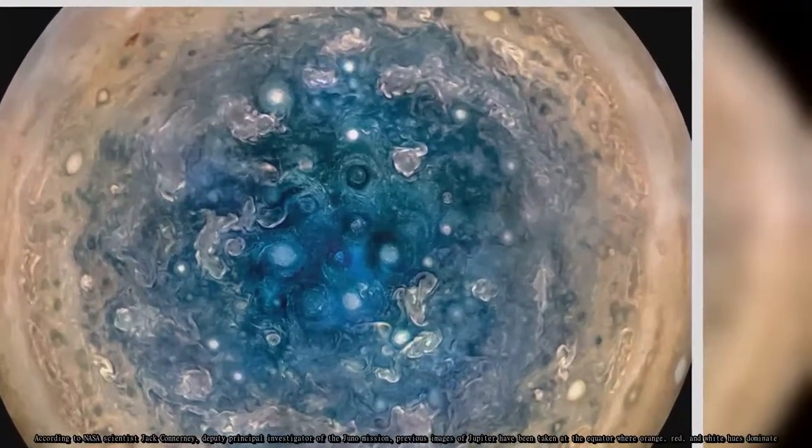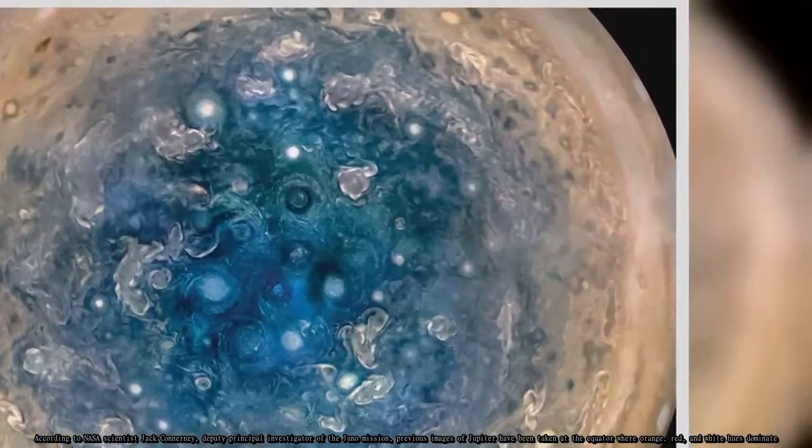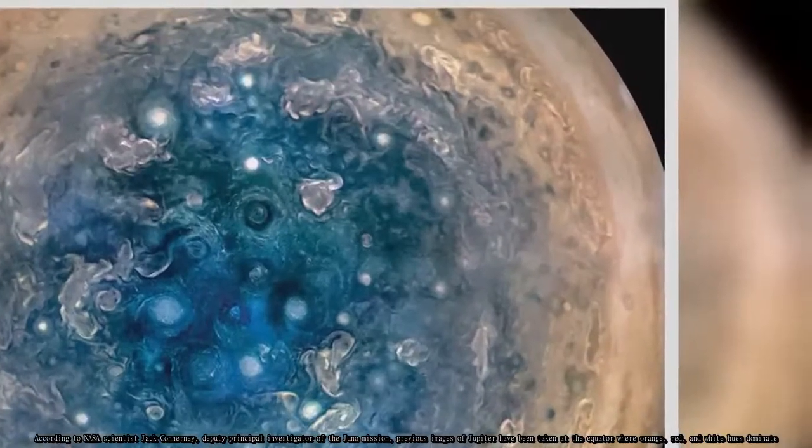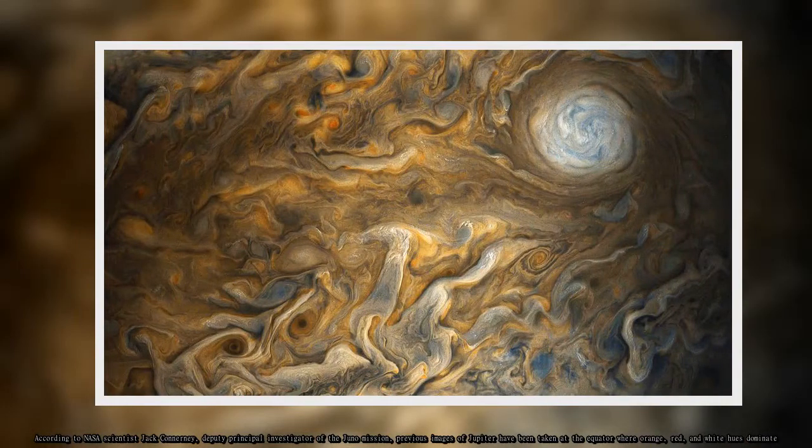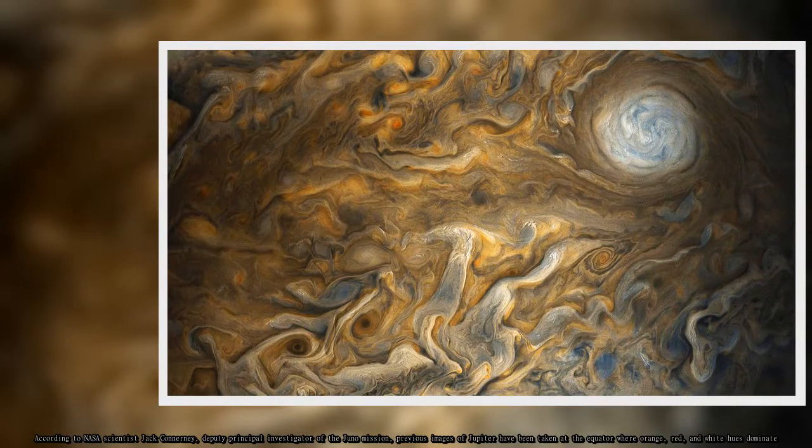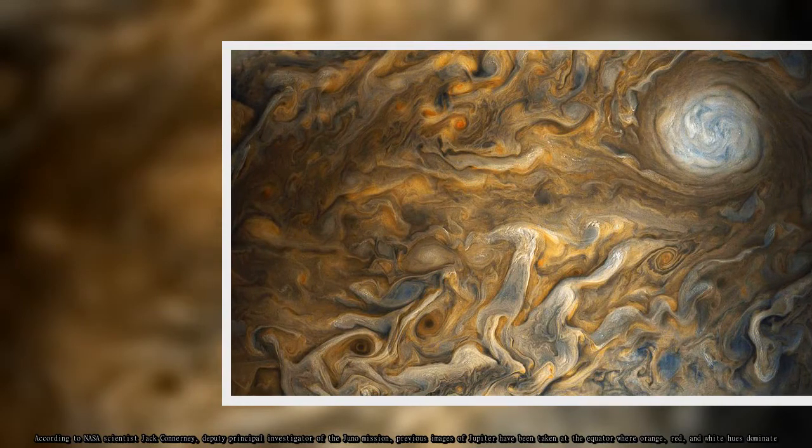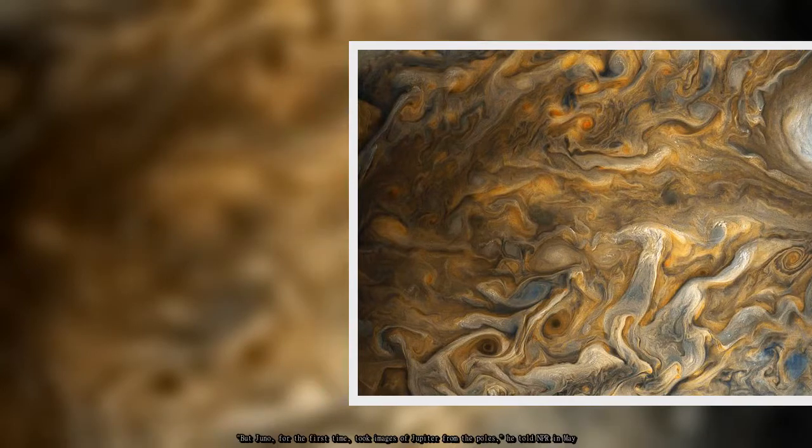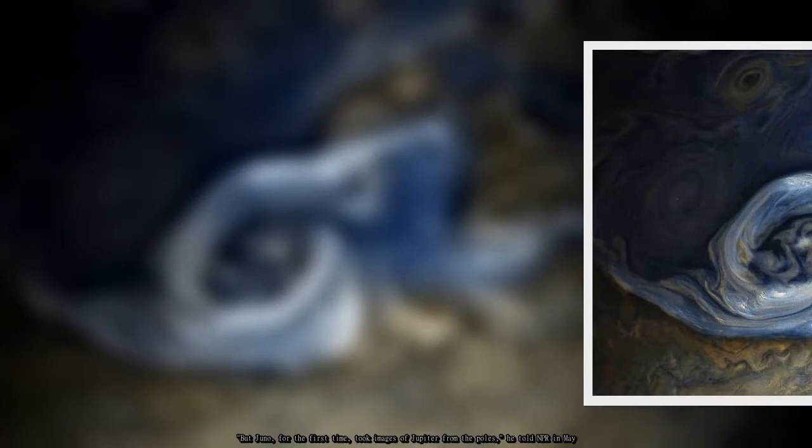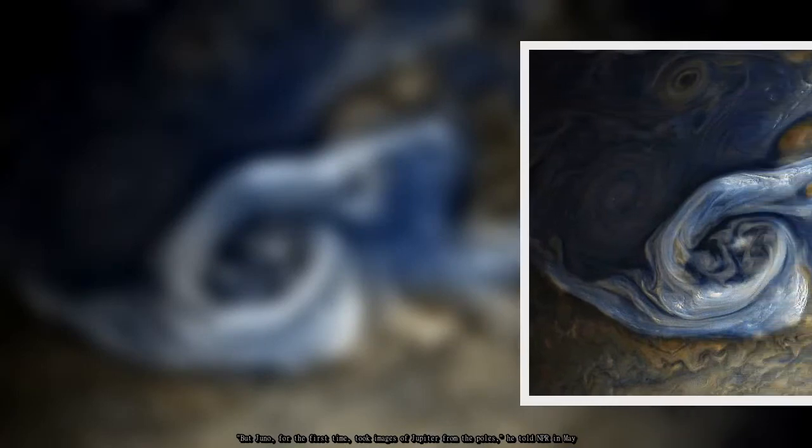According to NASA scientist Jack Connerney, deputy principal investigator of the Juno mission, previous images of Jupiter have been taken at the equator where orange, red, and white hues dominate. But Juno, for the first time, took images of Jupiter from the poles, he told NPR in May.